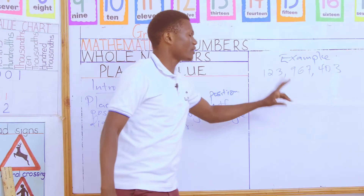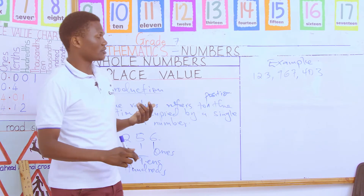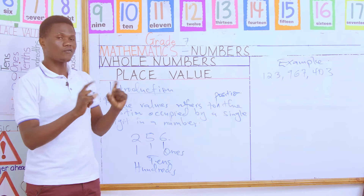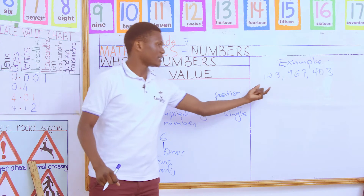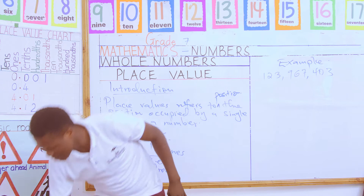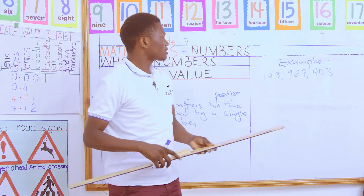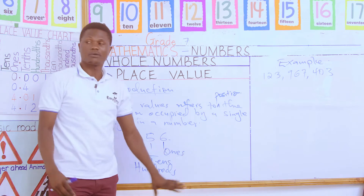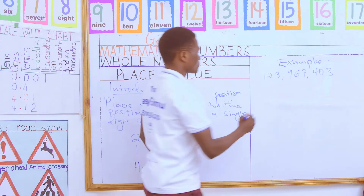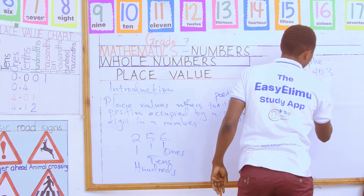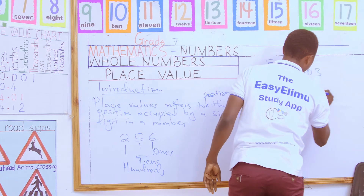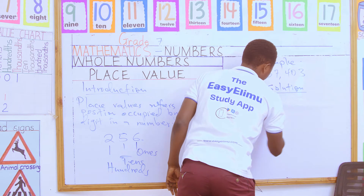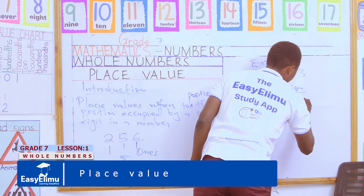We have two methods for solving place value. Method one is the abacus method, where we use symbols — oval-like symbols — to represent the digits. Method two is the normal tabulated place value format that we have been using in previous classes. Let's start with method one: abacus.